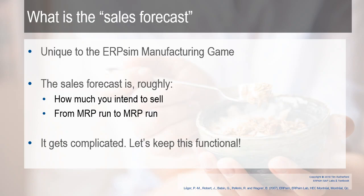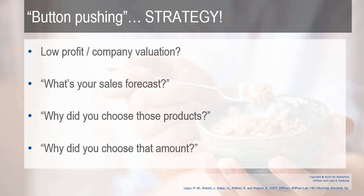This video is going to be more functional in nature — just going through pressing buttons, showing you how it works. But realize it is definitely strategic in nature and can be quantified. If you're working through the manufacturing game and have low profit or low company valuation, some questions to ask: What's your sales forecast? Why did you choose those products — of the 12, why did you choose those? And why did you choose that amount for your sales forecast? These are things to ask yourself and your team.